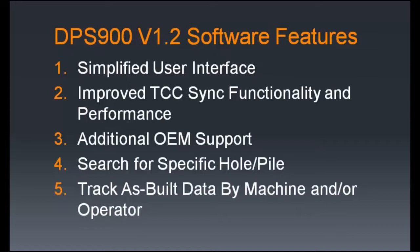Number one is the simplified user interface. When you start up version 1.2 and compare it to version 1.0 or 1.1, you'll notice we've simplified the icon panel so there's only one row of icons at any one time. We've also moved most of the features into the home icon, which is the main menu where you'll find basically anything you need. This has really cleaned up a lot of the UI accessible by the operator or by someone doing installation or configuration on the machine.